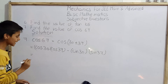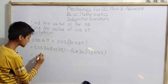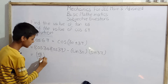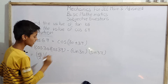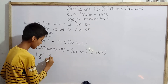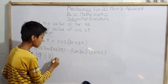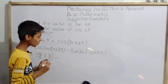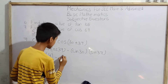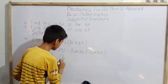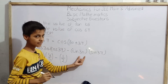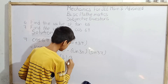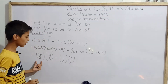Evaluating: cos 30° equals root 3 by 2, and cos 37° equals 4 by 5. Then sin 30° equals 1 by 2, and sin 37° equals 3 by 5. So we have (root 3 / 2) × (4/5) minus (1/2) × (3/5).